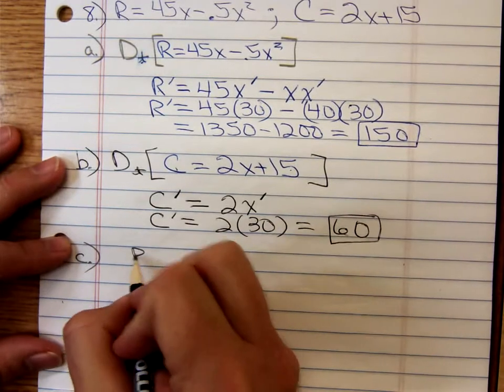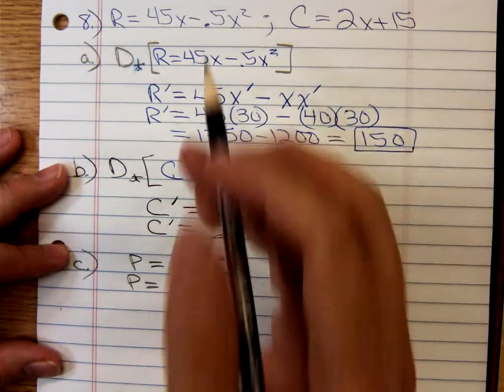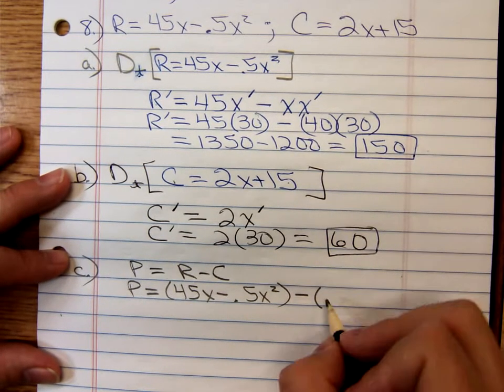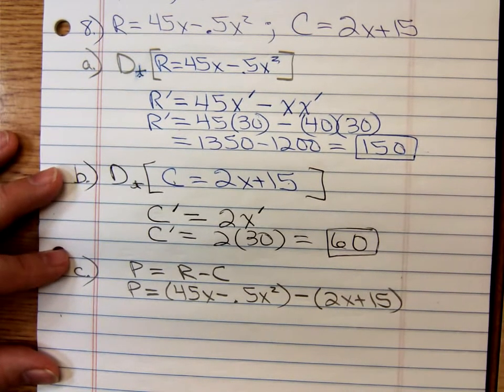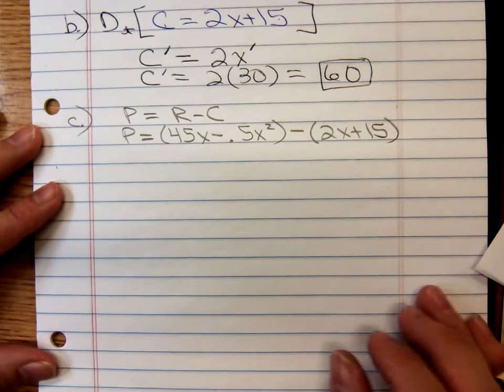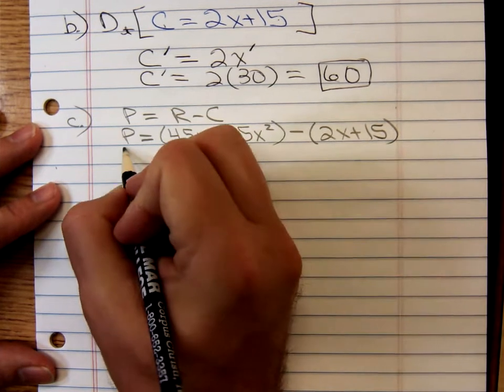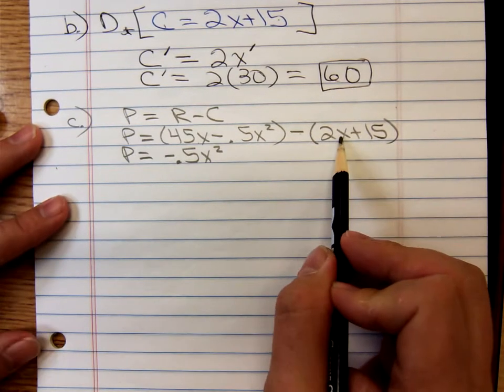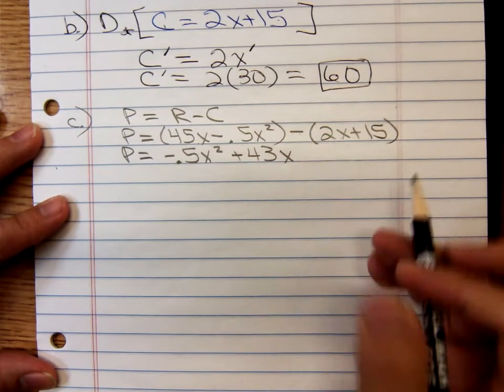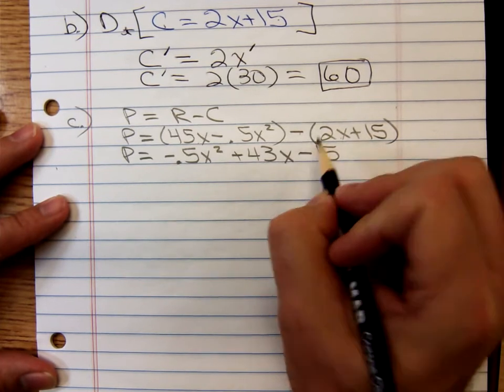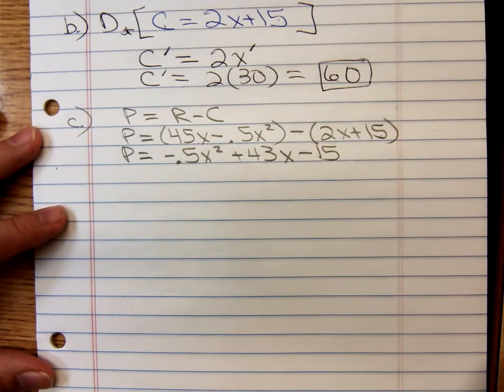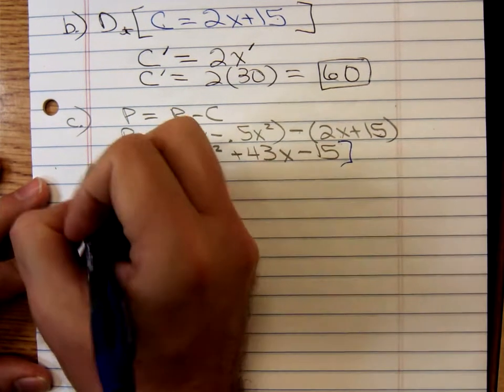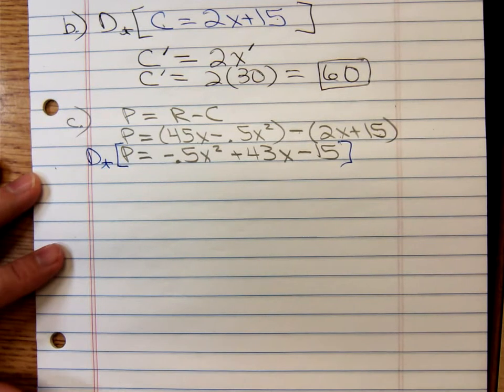So revenue, that's 45X minus 0.5X squared. Cost is 2X plus 15. Pushing that up there, we then have negative 0.5X squared, 45X minus 2X, that gives us plus 43X and minus 15. Don't forget to distribute the minus over that fixed cost of 15. And now we're going to differentiate with respect to T time.